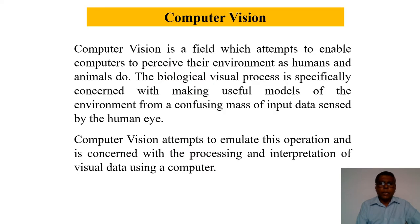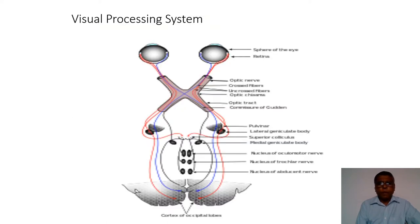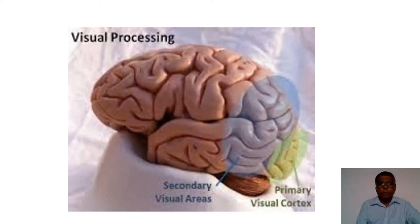Computer vision is the field where we try to give human visual capability to computers — like the ability to identify objects, people, and read text. That is the basic objective of computer vision. In the biological visual system, information received from the eyes is sent through optic nerves to the visual cortex at the back of the brain, which has the knowledge about objects and performs visual processing.